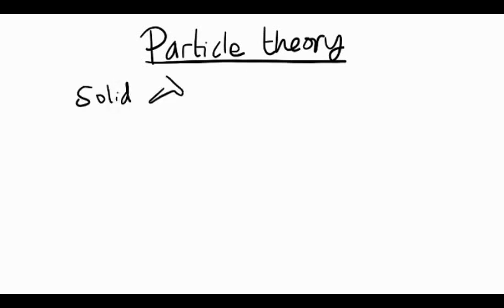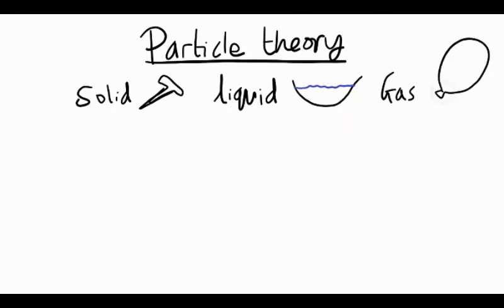Particle theory is the incredible theory that all substances around us are made up of tiny particles too small to see. Take for example a solid nail or liquid water in a bowl, or imagine the gas in a balloon. Each of these are made up of tiny particles much smaller than we can see.